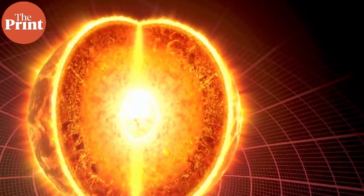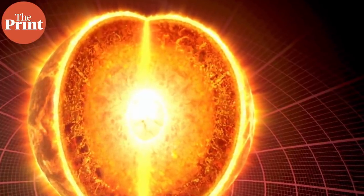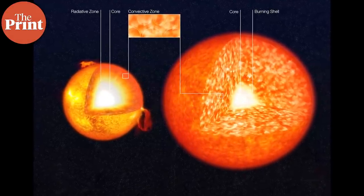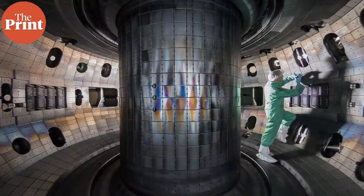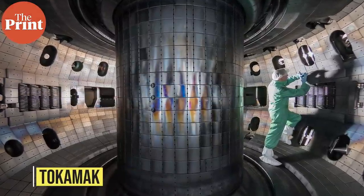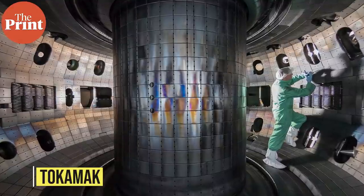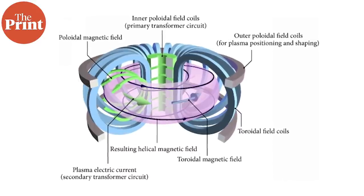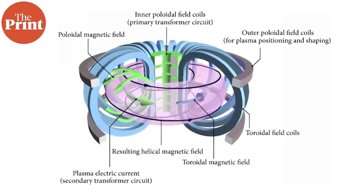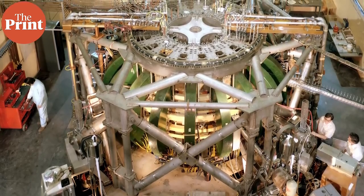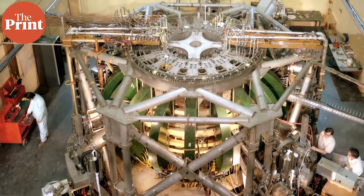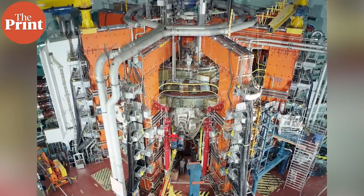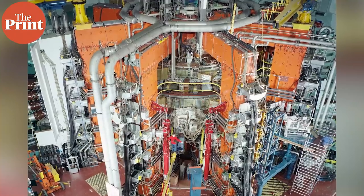Fusion reactors essentially replicate the environment and conditions found inside the core of stars, and this is not easy to achieve. The most common design for these reactors is something called the tokamak, a Russian word. This uses a very powerful magnetic field to confine plasma inside a secure chamber shaped like a torus, or a donut. These were first conceptualized by Soviet scientists back in the 1950s, and the design has been improved over the next couple of decades. But these reactors are also not easy to build because they're extremely expensive, given the temperatures they have to reach.